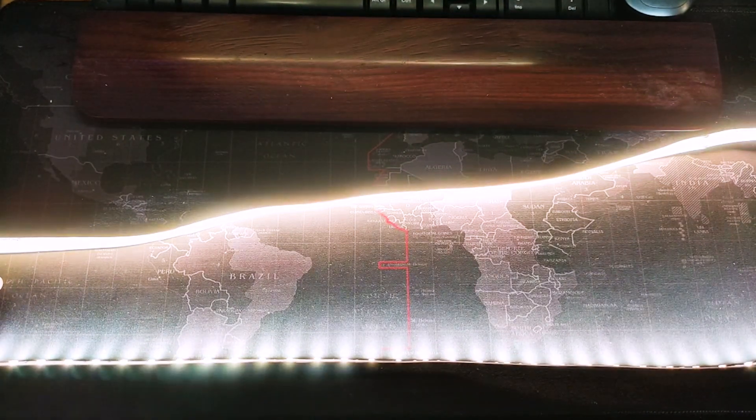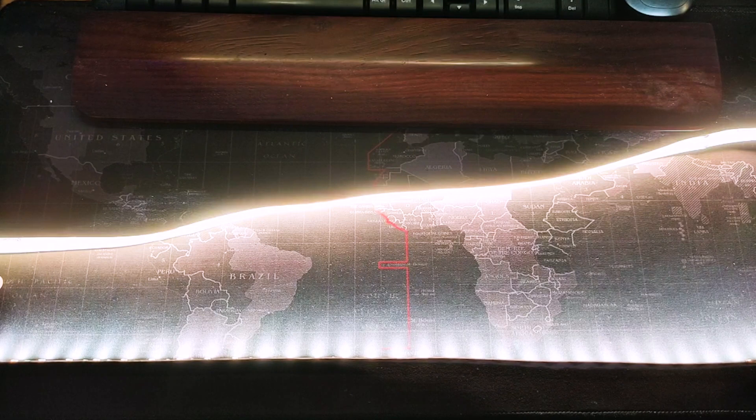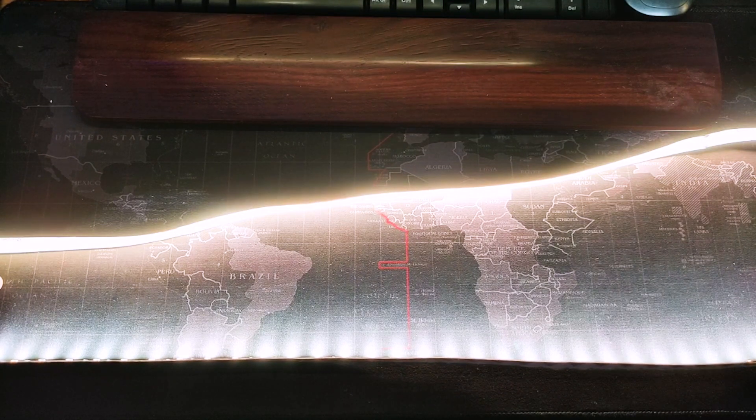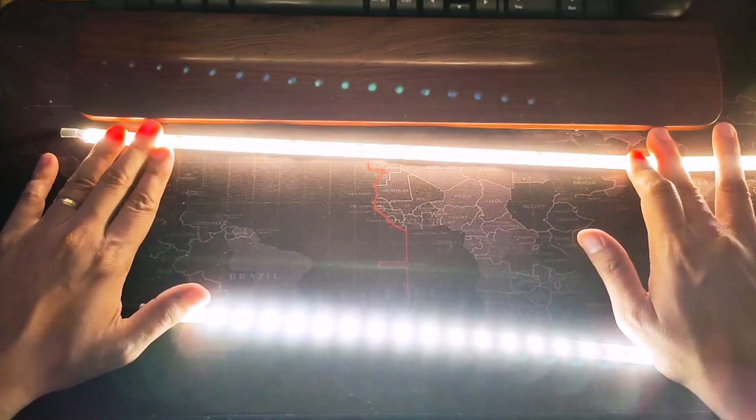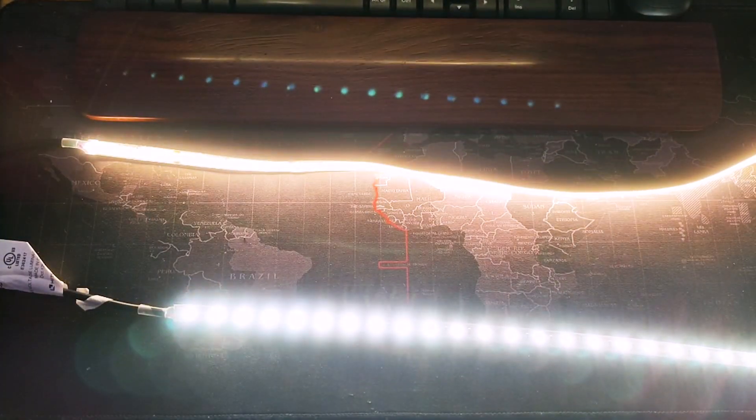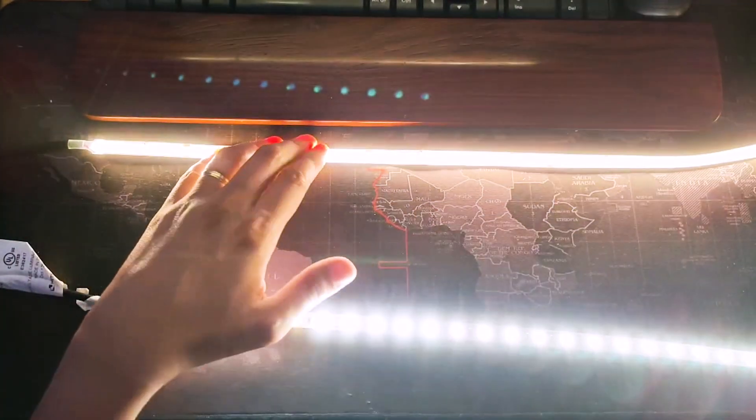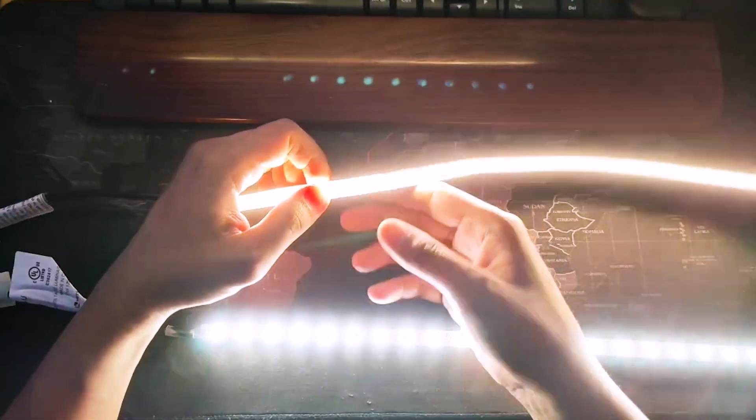So if you have an application that requires you to have the strips very close to the surface of a wall or something, you might want to consider using COBs because they have a very uniform light and no gaps.